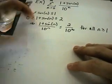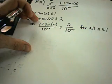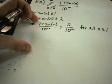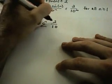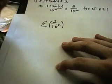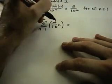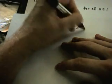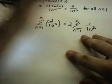So the idea in this case is: 2 over 10 to the n — do we know anything about that particular series? Well, if you think about the series 2 over 10 to the n, you can always factor the 2 out. Notice the 2 doesn't have an n on it, so I can just pull that out front, and then I'm left with 1 over 10 to the n.